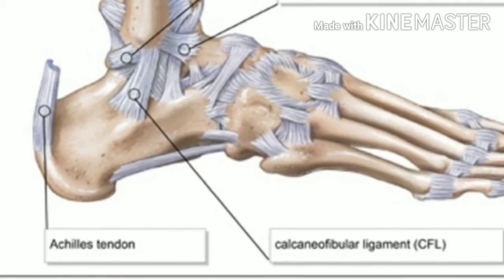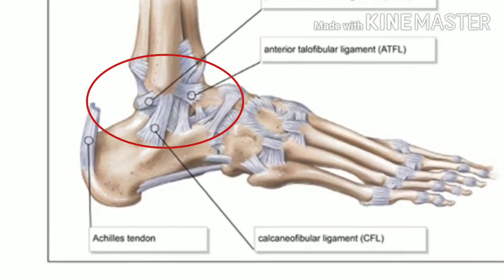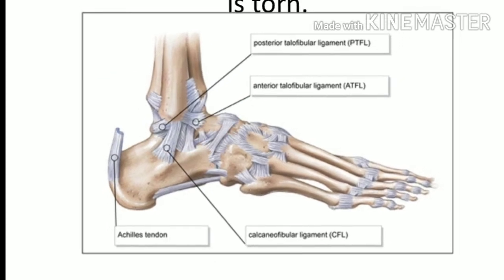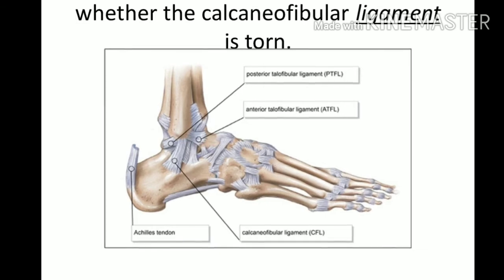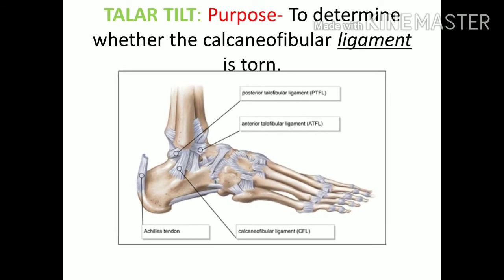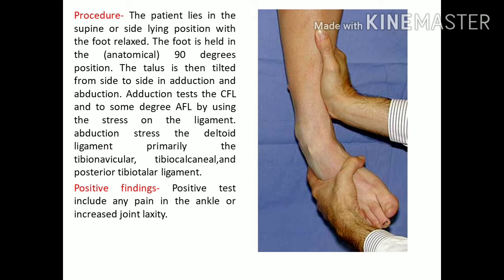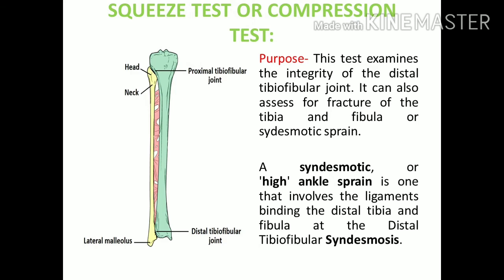Next is the Talar Tilt Test, which is for the calcaneo-fibular ligament. This ligament connects the calcaneum and fibula on the lateral and posterior side. Instead of pulling anteriorly, we twist the lateral side to stress the ligament and reproduce pain. The patient is supine with the ankle in 90-degree neutral position. One hand stabilizes the lower limb while the other hand placed on the forefoot applies stress. Laxity or pain indicates a positive test, and the point just above the lateral malleolus where the ligament lies would be painful.